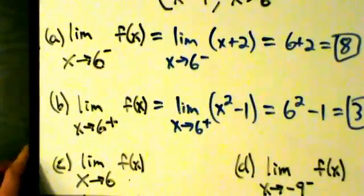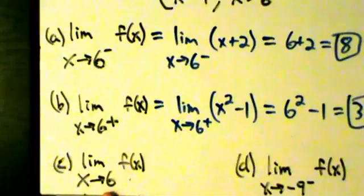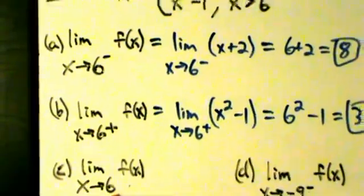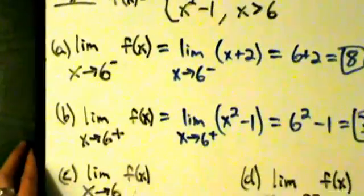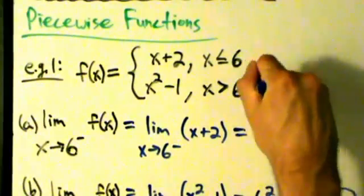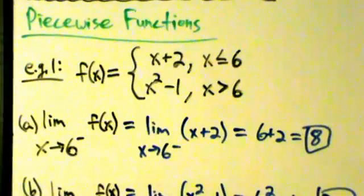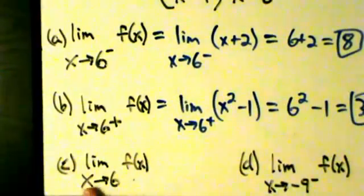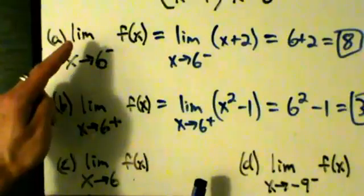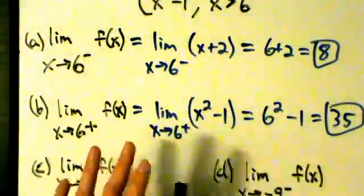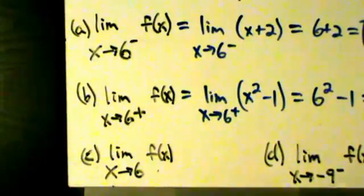Part C: the limit as x approaches 6 of f(x) — this is the two-sided limit; notice there's no minus or plus. We already did both one-sided limits. First, we check: is 6 a point where the function breaks into pieces? Yes. Is it a left or right-hand limit? No, it's two-sided. When doing a two-sided limit at a point where the function breaks into pieces, you have to do both one-sided limits first. The limit exists only if both one-sided limits exist and equal the same thing. The left-hand limit exists and equals 8; the right-hand limit exists and equals 35. They both exist, but they don't equal the same thing, so the two-sided limit does not exist.